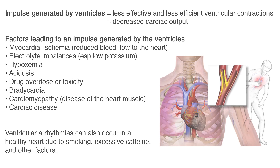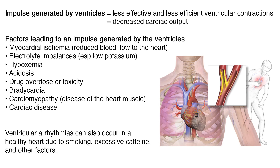Problems arise when impulses vary from this normal pathway. When an impulse is generated by the ventricles, ventricular contractions are less effective and less efficient, resulting in decreased cardiac output.